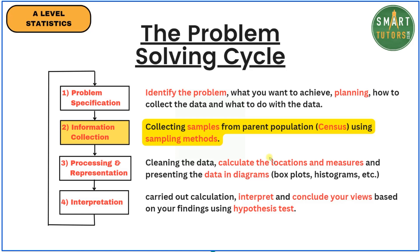The second stage, highlighted in yellow, is the part we are going to study: collecting samples from the parent population. Census is a key buzzword here. After this, we will move on to drawing diagrams — box plots, histograms — and calculating measures to represent the data.